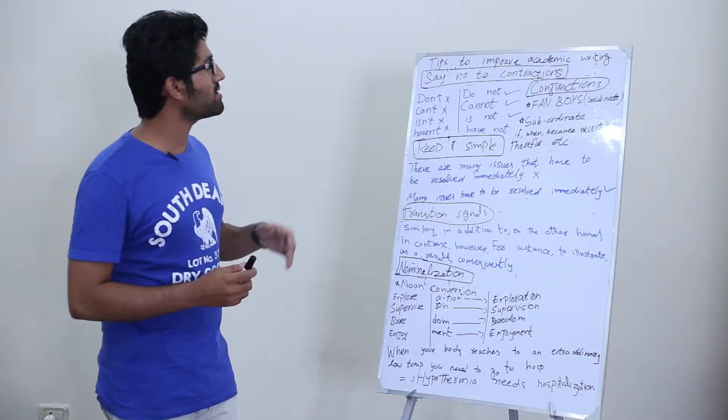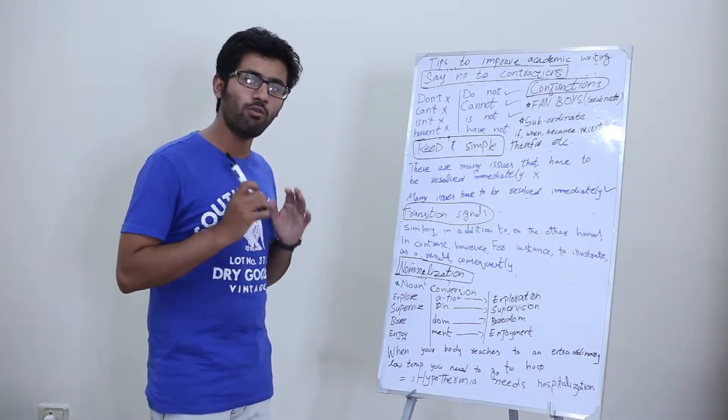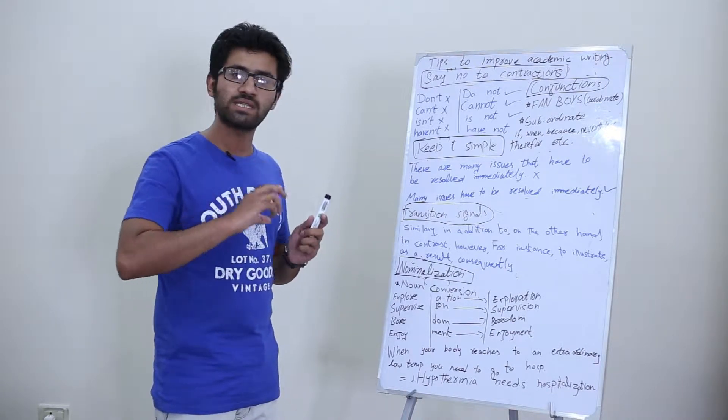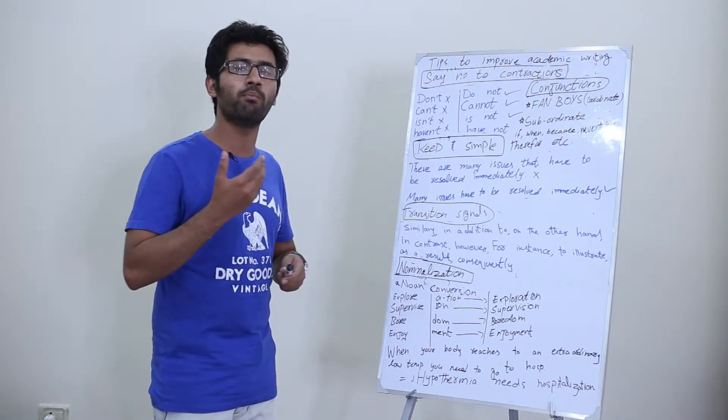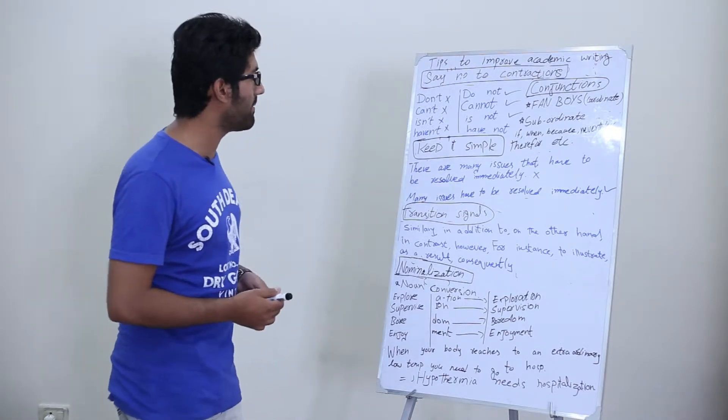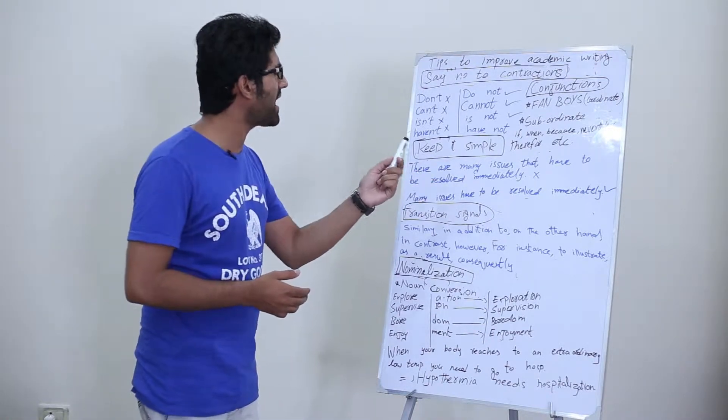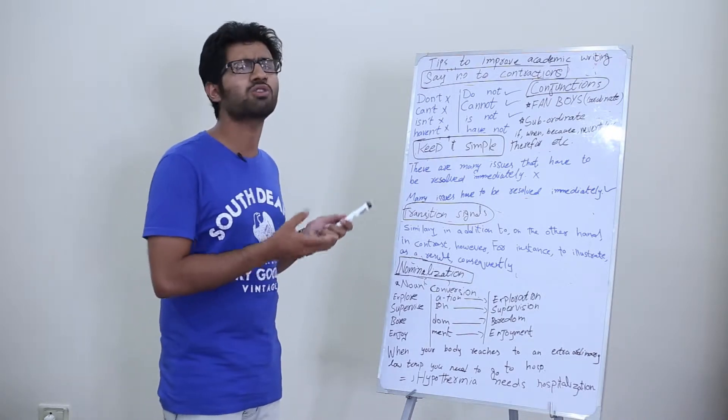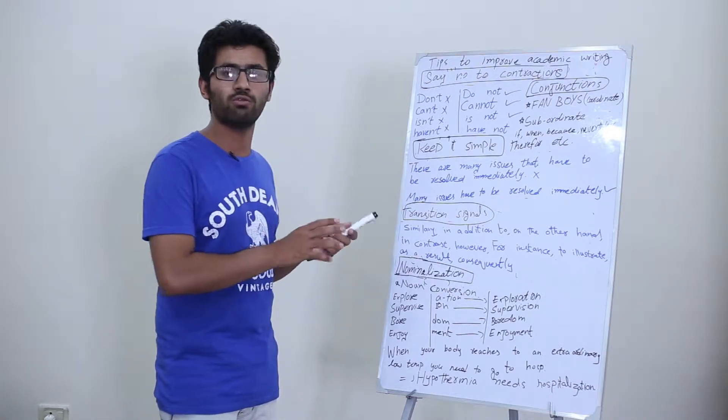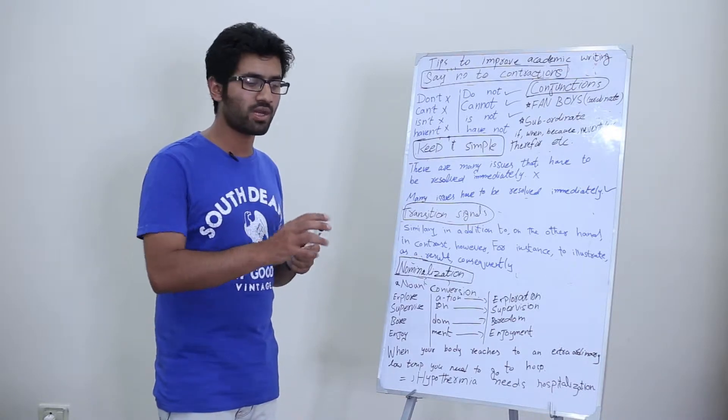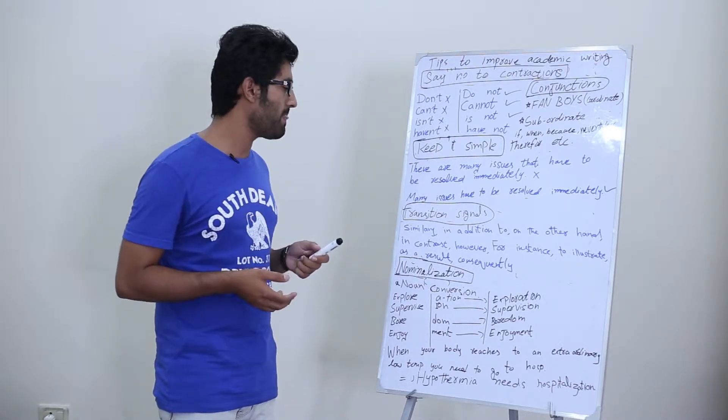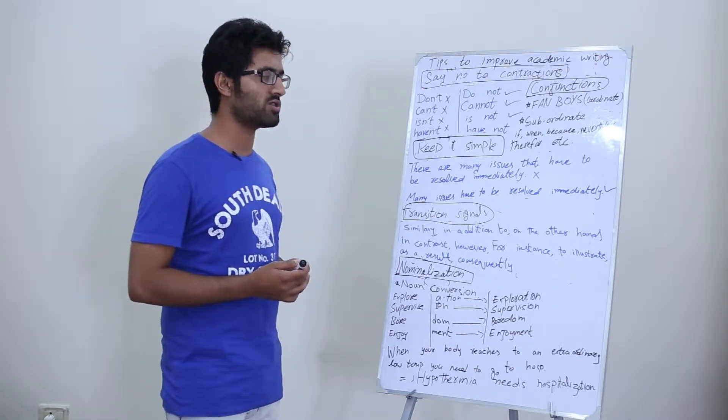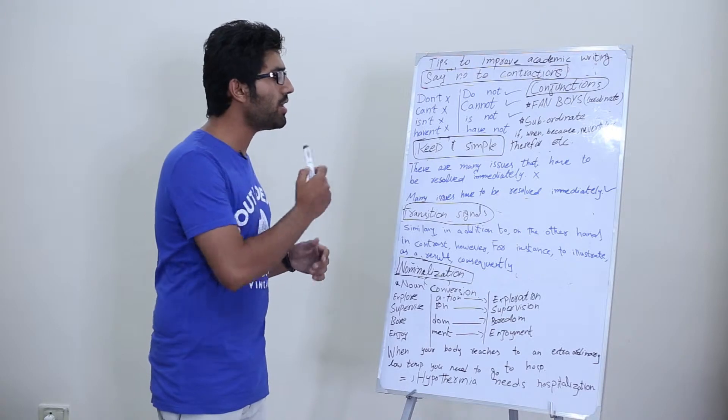The next tip is keep it simple. Always keep your writing simple because you are a beginner and you have to start from the very beginning if you want to improve your academic writing skills. Here is an example: there are many issues that have to be resolved immediately. It is a long sentence, a complicated sentence. You need not to use such kind of sentences because it gives a bad impression to the reader. Try using simple sentences like 'many issues have to be resolved immediately.'